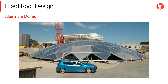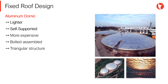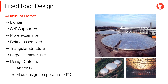A very good alternative are aluminum dome roofs, like the one shown on screen. Aluminum dome roofs are lighter, self-supported, and obviously more expensive than other types of roofs due to labor costs and material. They are bolted assembled and have a triangular structure for rigidity reasons. Normally they are used for large diameter tanks. The design criteria are indicated in Annex G of the API 650 code, where the maximum design temperature cannot exceed 93 degrees Celsius.